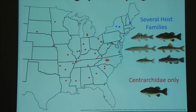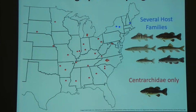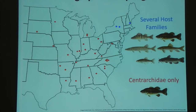I wanted to give you an idea of where we've sampled so far. We have a collaborator who's sampled a lot of Centrarchids all over the eastern half of the United States, which has expanded our geographic sampling range a lot. With our own sampling, we've concentrated efforts in New York and New Hampshire, and each fish icon represents the fish family that we've sampled from there.